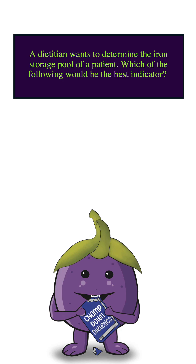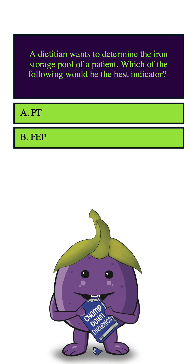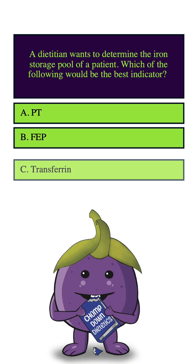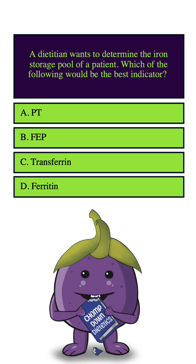A dietician wants to determine the iron storage pool of a patient. Which of the following would be the best indicator? A, PT. B, FEP. C, transferrin. D, ferritin.